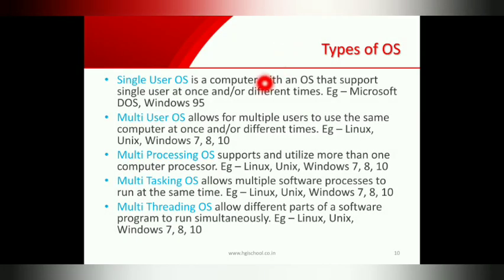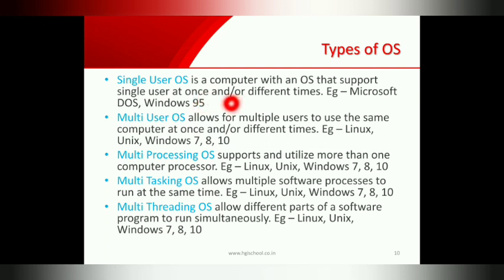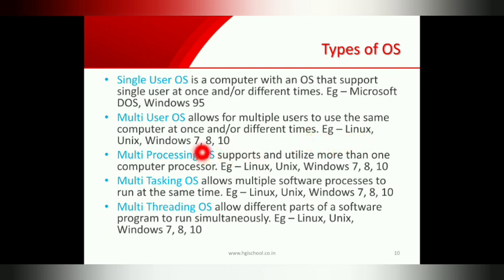Now we will study about the types of OS. There are different types: single-user operating system supports only one user at a time — example is Microsoft DOS and Windows 95. Multi-user operating systems allow multiple users to use the same computer at once or at different times — examples are Linux, Unix, Windows 7, Windows 8, and Windows 10.